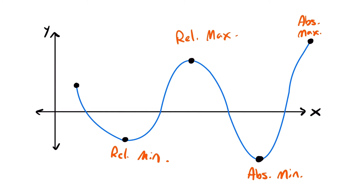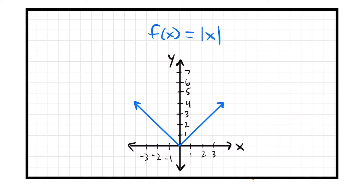Revisiting our original graph: everywhere there is a relative maximum or minimum, the slope at that point is going to be 0. The tangent line at a relative max or min is a horizontal line with slope 0. The only exception is functions with non-differentiable points — for example, the absolute value of x. You can't take a derivative at x = 0 because of the sharp point, yet that point is still a minimum on the function even though the slope there is not 0.